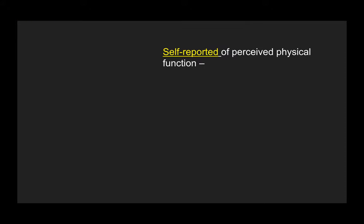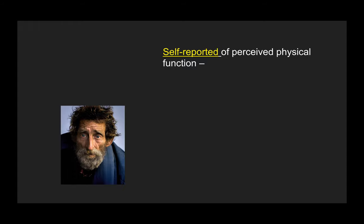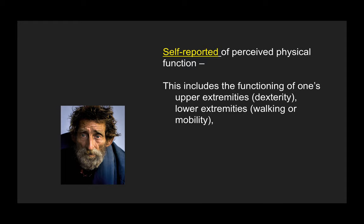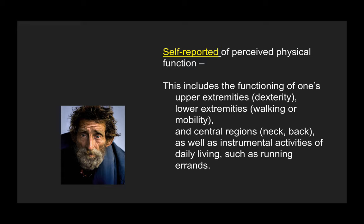We start with the basics. The PROMIS physical function measure is a self-report. Patients respond to questions or items. These items are then used to gain an impression of the patient's perceived abilities. In this case, the functioning of one's upper extremities, lower extremities, central regions, as well as instrumental activities of daily living, such as running errands.